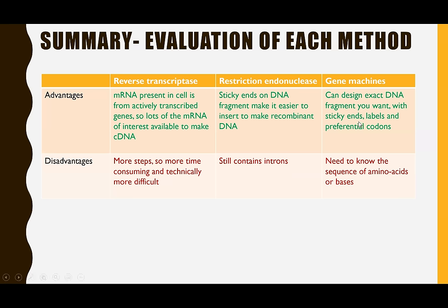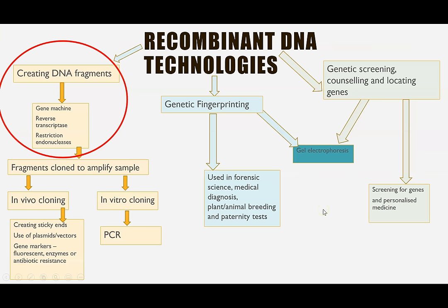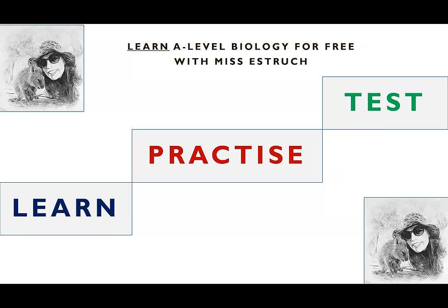The gene machine is very quick and very accurate — you can design the exact DNA fragment you want, add sticky ends, add DNA probes as labels, and much more; it won't have introns. The downside is you need to invest time beforehand to identify the exact amino acid sequence and therefore the DNA base sequence. So that's it for the creating DNA fragments stage of recombinant DNA technology. You just need to be aware of those three techniques for isolating the gene you want to clone and insert into another organism, along with their pros and cons.